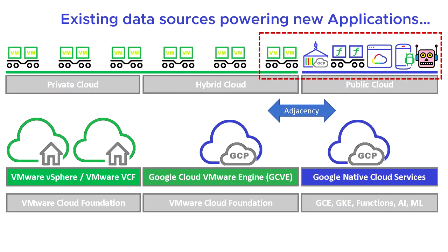In a previous video, I talked about doing a hybrid cloud, where we had a private cloud and a public cloud joined together to form a hybrid cloud with adjacency to true public cloud services. We were moving an existing virtual machine adjacent to Google native cloud services, so we could use things like containers, functions, modern apps, and more specifically things like artificial intelligence and machine learning. But for this video, I just want to concentrate more on this traditional on-premise datacenter.